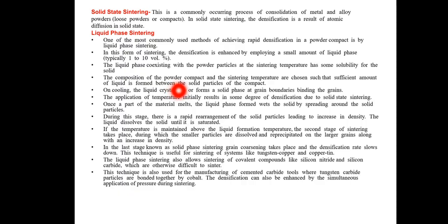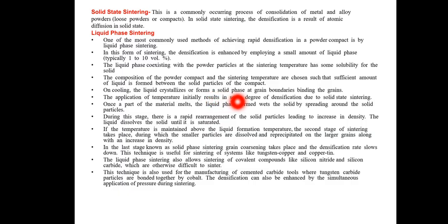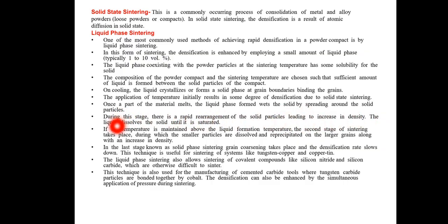The composition of the powder compact and the sintering temperature are chosen such that a sufficient amount of liquid is formed between the solid particles in the compact. On cooling, the liquid crystallizes or forms a solid phase in grain boundaries, binding the grains. The application of temperature initially results in some degree of densification due to solid state sintering. Once part of the material melts, the liquid phase formed wets the solid by spreading around the solid particles.